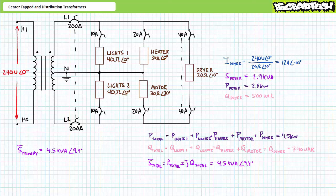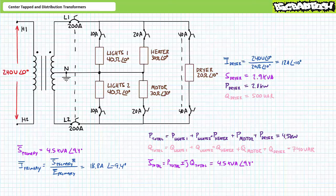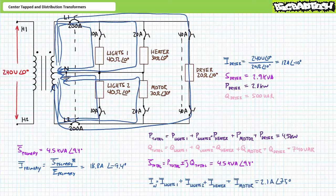If we were to assume this transformer is 100% efficient, the primary must also provide 4.5 kilovolt amperes of apparent power. An algebraic manipulation of the AC power formula solving for current demonstrates the 240 volt primary draws 18.8 amps at an angle of negative 9.4 degrees. Given the dryer does not necessitate the neutral line, current in the neutral line remains 2.1 amps at an angle of 75 degrees — i.e. the degree of imbalance between that drawn from phase L1 and phase L2.